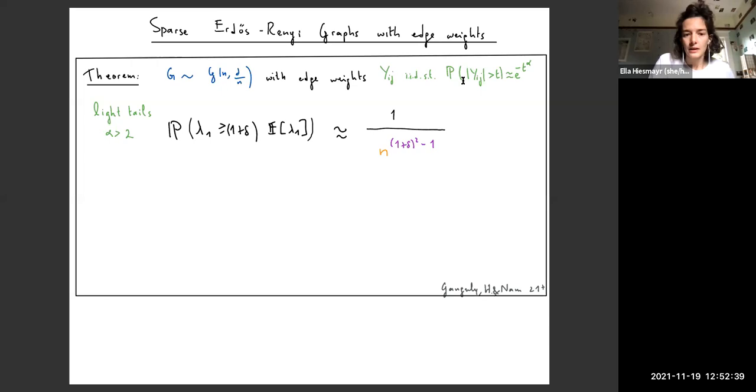For the case of light tails, the large deviation probability can be shown to be approximately 1 over n to the 1 plus delta squared minus 1. I want to point out that the rate function here does not depend on alpha. In this case, we have a universality result where as long as the tails are lighter than Gaussians, the specific edge weights distribution doesn't matter. In particular, if you take alpha to be infinity here, you can view this as a case of graphs with constant edge weights, which corresponds to the result by Bhattacharya, Bhattacharya and Ganguly that I mentioned earlier, and they have the same rate function as well.